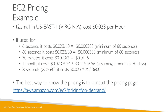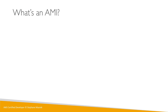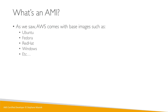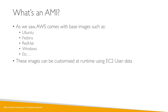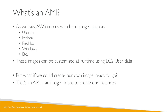You can also use AMIs for EC2. The AMI we've been using so far is Amazon Linux — when you create a launch instance you see the menu with Ubuntu, Fedora, Red Hat, Windows, etc. We can customize images at runtime using EC2 user data, but if we're always doing the same setup, why not create our own ready-to-go image? You can do this — it's called a custom AMI.